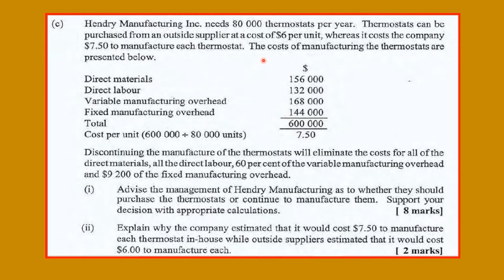The costs of manufacturing two moustaches include direct materials, direct labor, variable overhead — the three elements of cost — and fixed costs, giving a total of $600,000. So $600,000 divided by 80,000 units is $7.50 per unit. We have additional information: discontinuing the manufacture of the two moustaches will eliminate all direct materials costs, all direct labor costs, 60% of the variable manufacturing overhead, and $9,200 of the fixed manufacturing overhead. So these are the items that would change — these are the relevant costs.